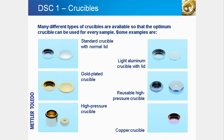Mettler-Toledo offers different types of crucibles to suit different sorts of samples. The standard DSC crucible is light and sturdy and easy to handle. It is made of pure aluminum to ensure good thermal conductivity. The crucibles can be hermetically sealed, left fully open, or covered by a pierced lid. The diameter of the hole in the lid determines the degree of gas exchange with the surroundings and can therefore influence evaporation or reaction processes.